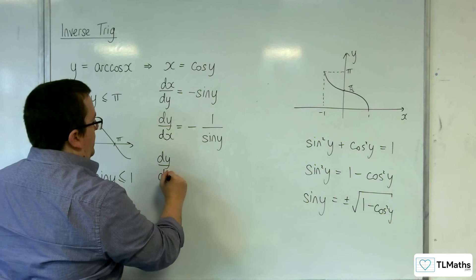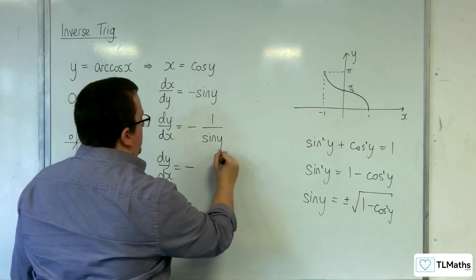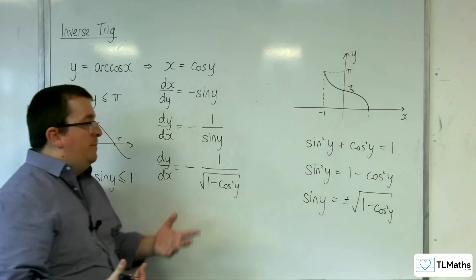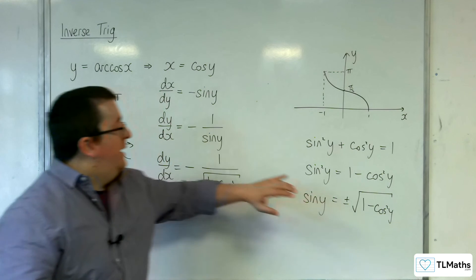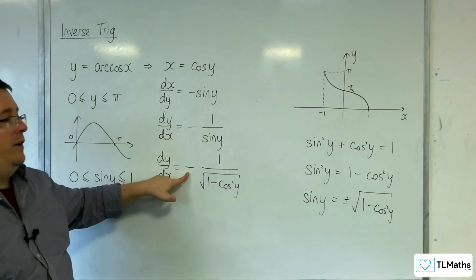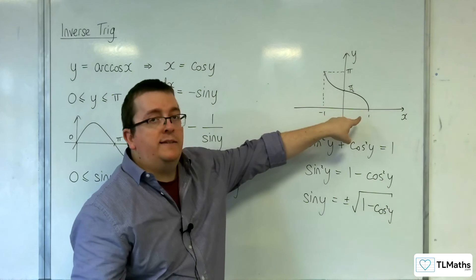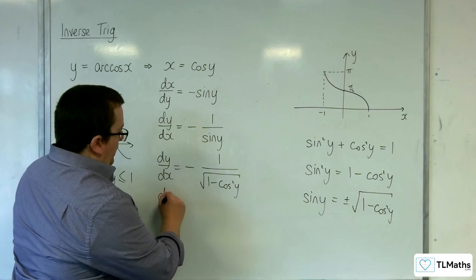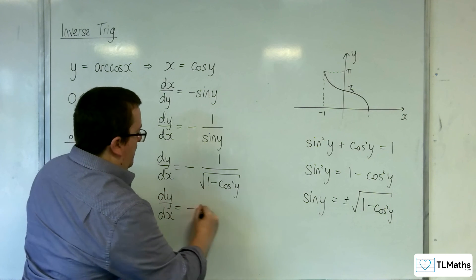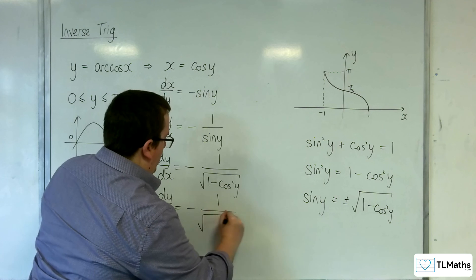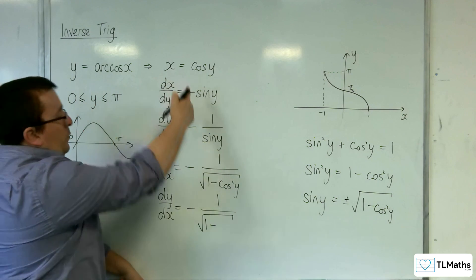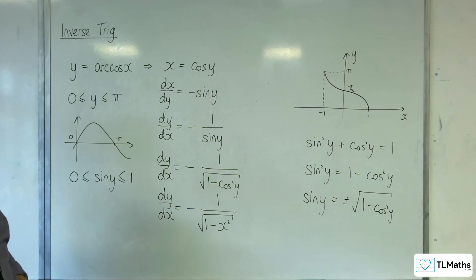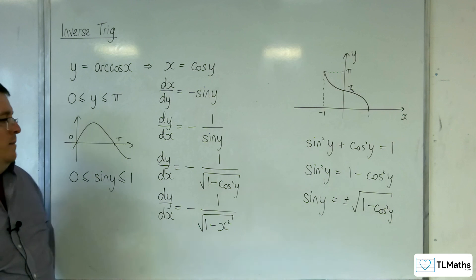So dy by dx is equal to minus 1 over the square root of 1 minus cosine squared y. And what's good about taking the positive square root is that now we're not going to knock out the minus sign in the front. And I knew that the gradient had to be negative anyway from the function. So now we can say dy by dx is equal to minus 1 over the square root of 1 minus x squared.